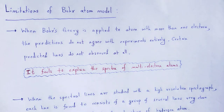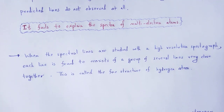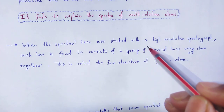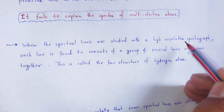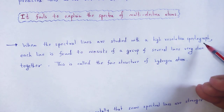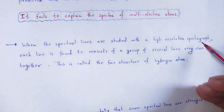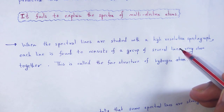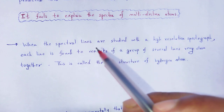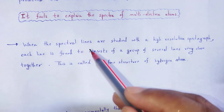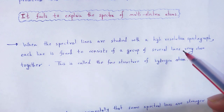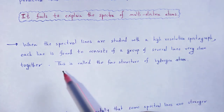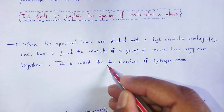One of the limitations. Next, when the spectral lines are studied with a high resolution spectrograph — an optical instrument through which we can easily detect spectral lines — each line is found to consist of a group of several lines very close together. This is called the fine structure of the hydrogen atom.